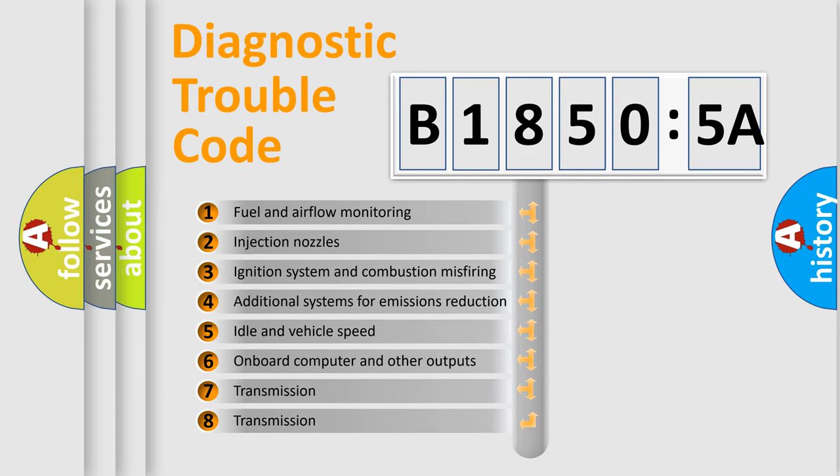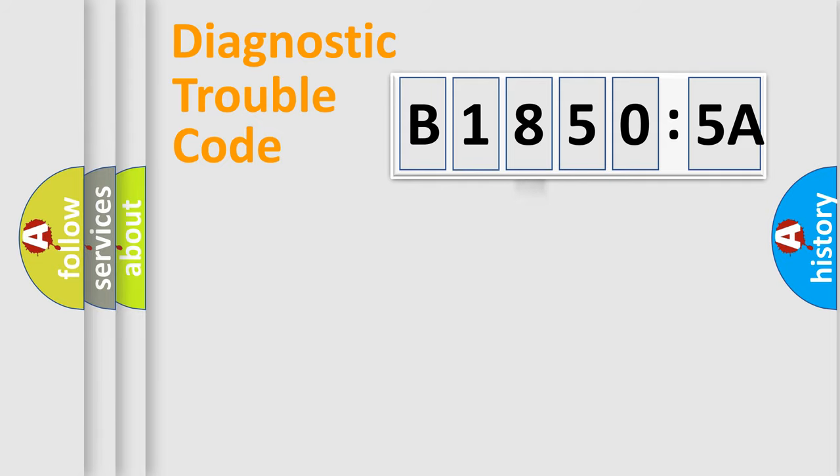The third character specifies a subset of errors. The distribution shown is valid only for the standardized DTC code. Only the last two characters define the specific fault of the group.